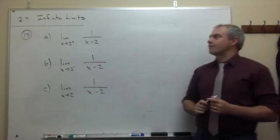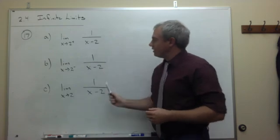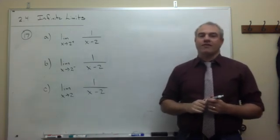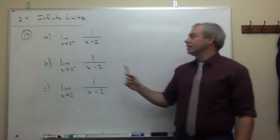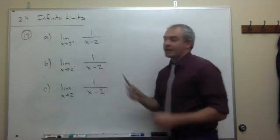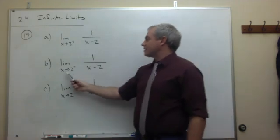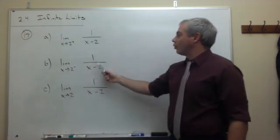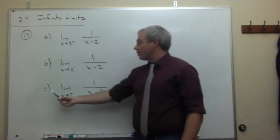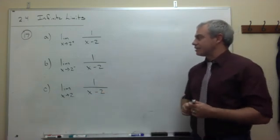In this video, we're going to look at problem number 17. We have three limits here that we want to evaluate. The first limit is the limit as x goes to 2 from the right of 1 over x minus 2. The second limit is the limit as x goes to 2 from the left of 1 over x minus 2. And then finally, part c is the limit as x goes to 2 of 1 over x minus 2.